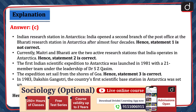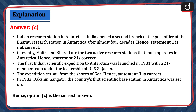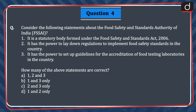Regarding Indian Research Stations in Antarctica: India opened a second branch of the post office at the Bharti Research Station in Antarctica after almost 4 decades. Hence, statement 1 is not correct. Currently, Maitri and Bharti are the two active research stations that India operates in Antarctica. Hence, statement 2 is correct. The first Indian scientific expedition to Antarctica was launched in 1981 with a 21-member team under the leadership of Dr. S.Z. Kassin. The expedition set sail from the shores of Goa. Hence, statement 3 is correct. In 1983, Dakshin Gangotri, the country's first scientific base station in Antarctica, was set up.